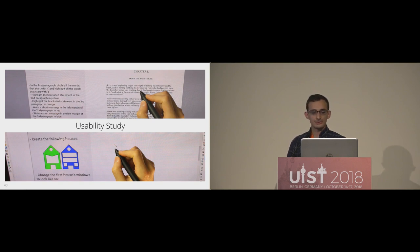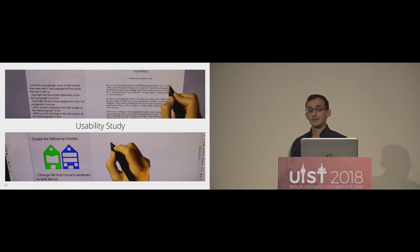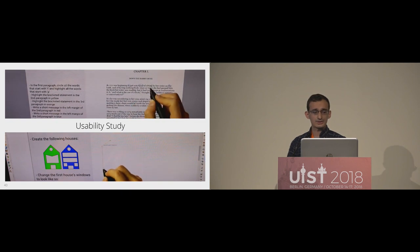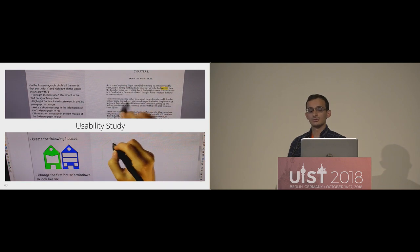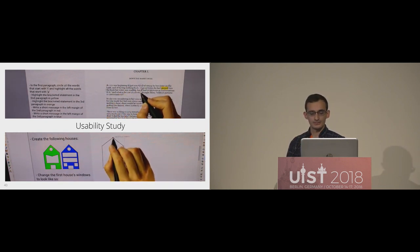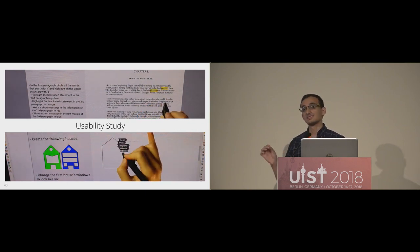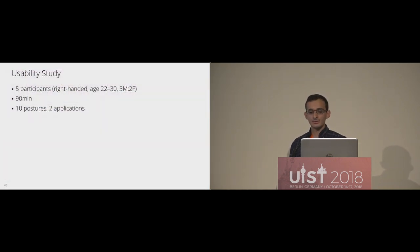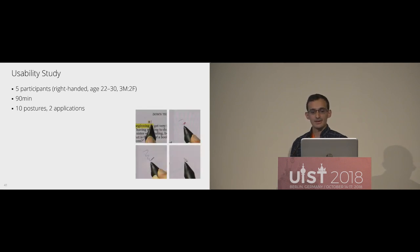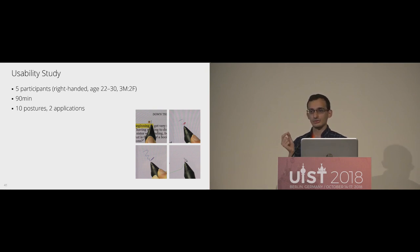We evaluated these with a usability study where participants were asked to perform various actions with these postures. In the document demo, this included circling and highlighting words; in the vector illustrator, it was recreating houses. Participants completed a 10-minute training session on the posture set and on each specific application. From the results, many participants enjoyed the idea and were interested in having one or two postures for frequently used actions, like switching between pen and eraser. We also noticed that in both applications, the cursor would change when you switch the tool — participants found this very useful feedback, fiddling with postures until they got the cursor they wanted.